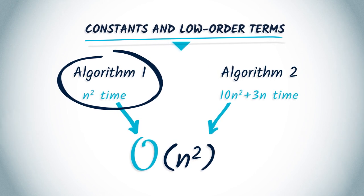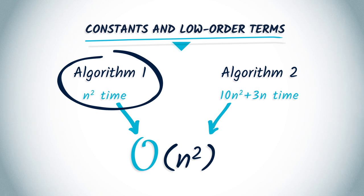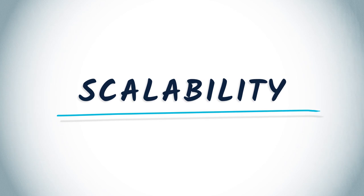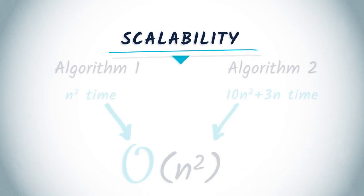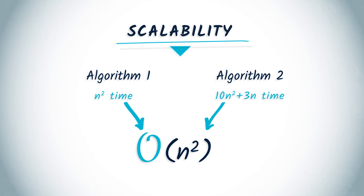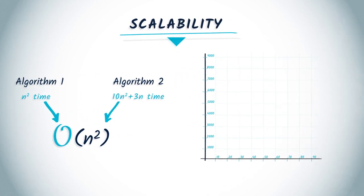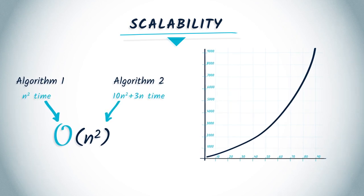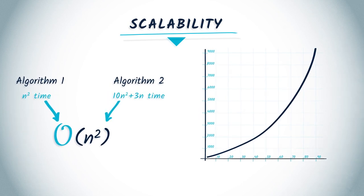However, constants do not matter for the scalability question, which asks how the algorithm's execution time changes as a function of the problem size. Even though an algorithm that requires n² time will always be faster than an algorithm that requires 10n² + 3n time, for both algorithms if the problem size doubles, the actual time will quadruple.